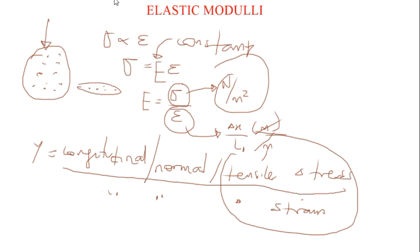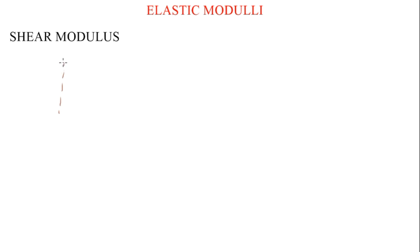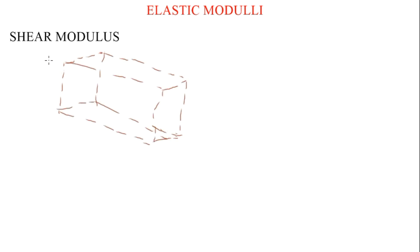Let's talk about shear modulus. The shear modulus is the ratio of the shear stress to the shear strain. Suppose that we have a rectangular block — I will use dotted lines for the original shape of the block. If you exert a tangential force on this block, it will shift a little bit to a new position.